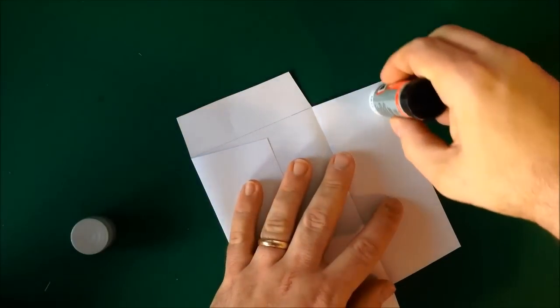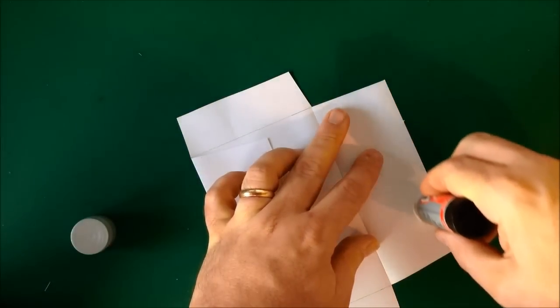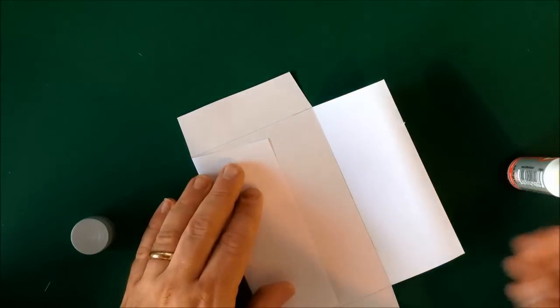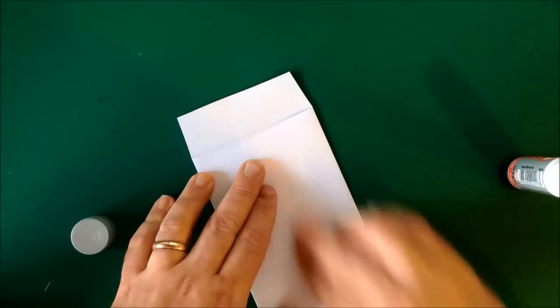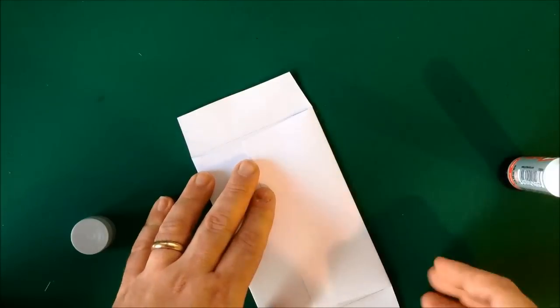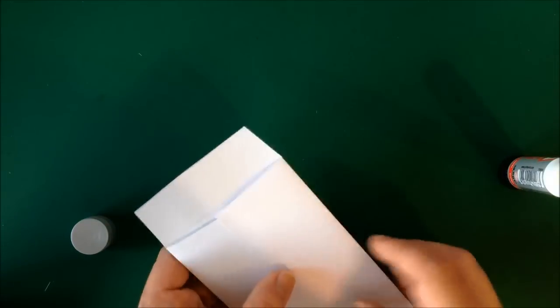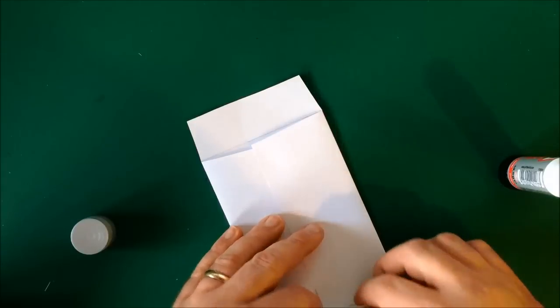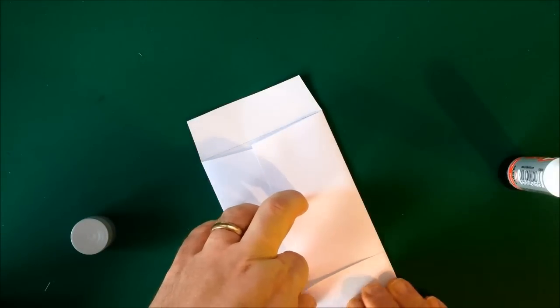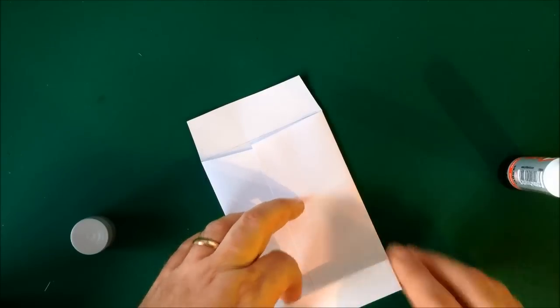And use some glue to stick this flap down on the one opposite. If you were to take a little bit more care you'd be careful to align these so that the glue doesn't get out of control and stick your envelope closed.